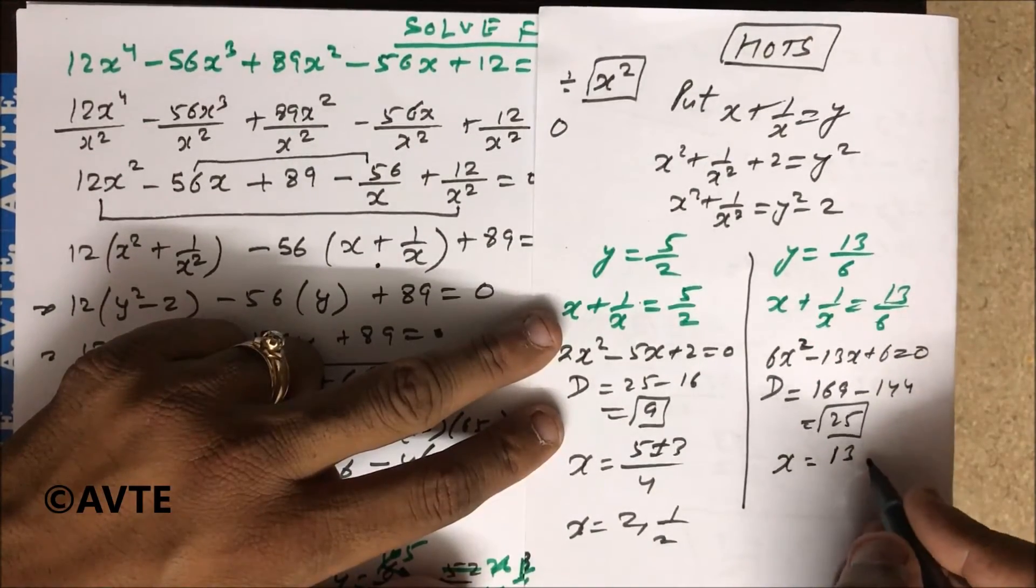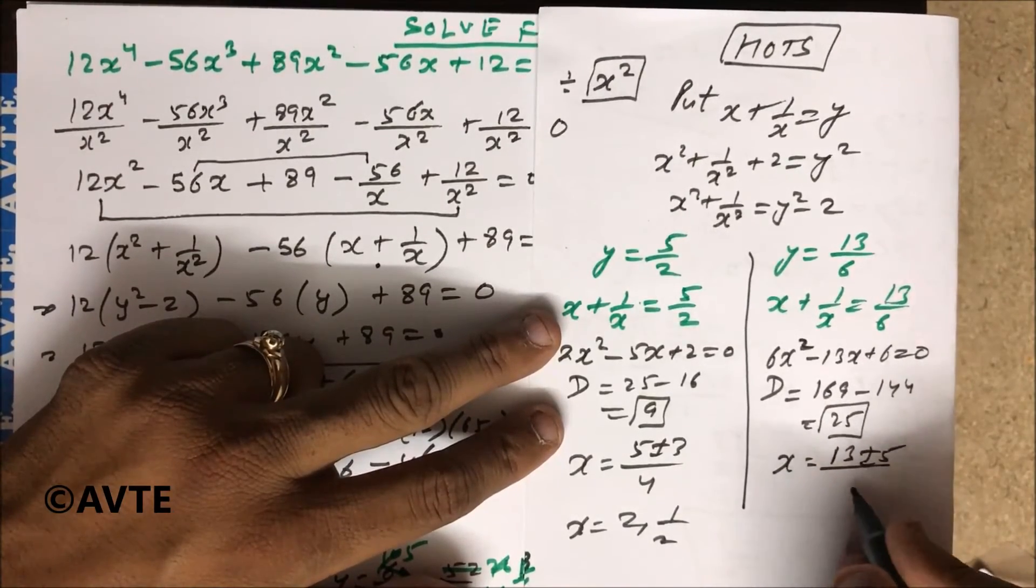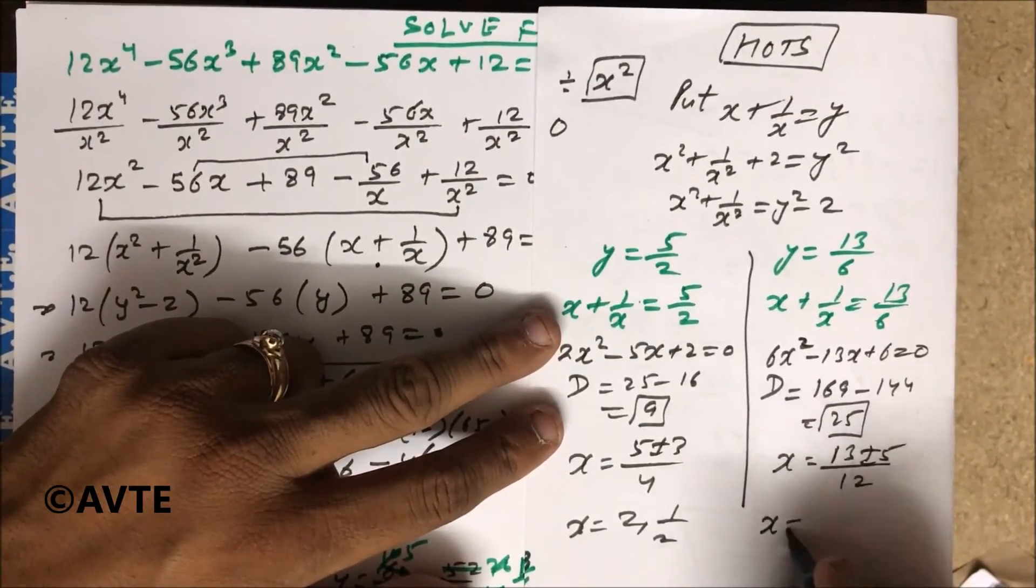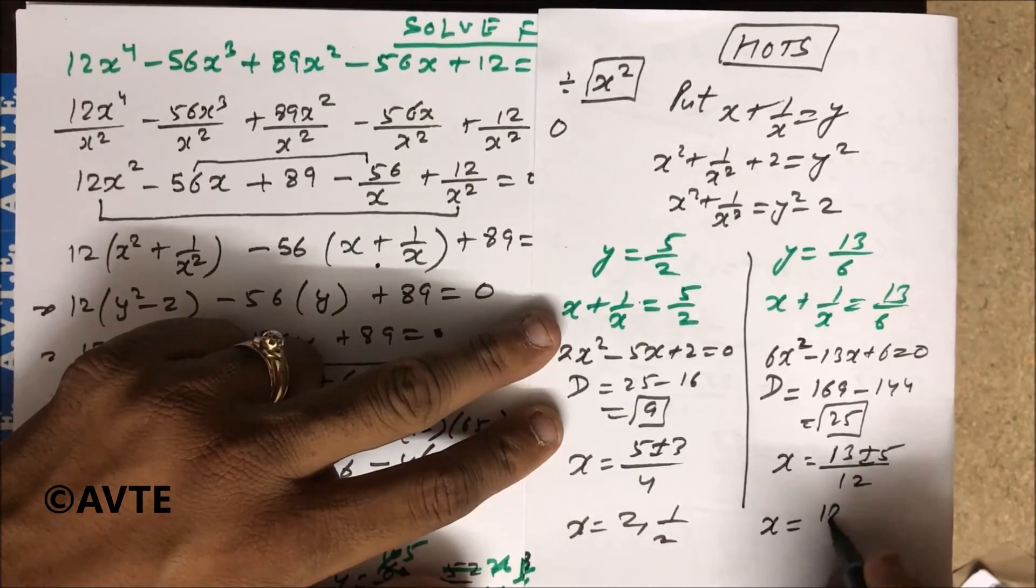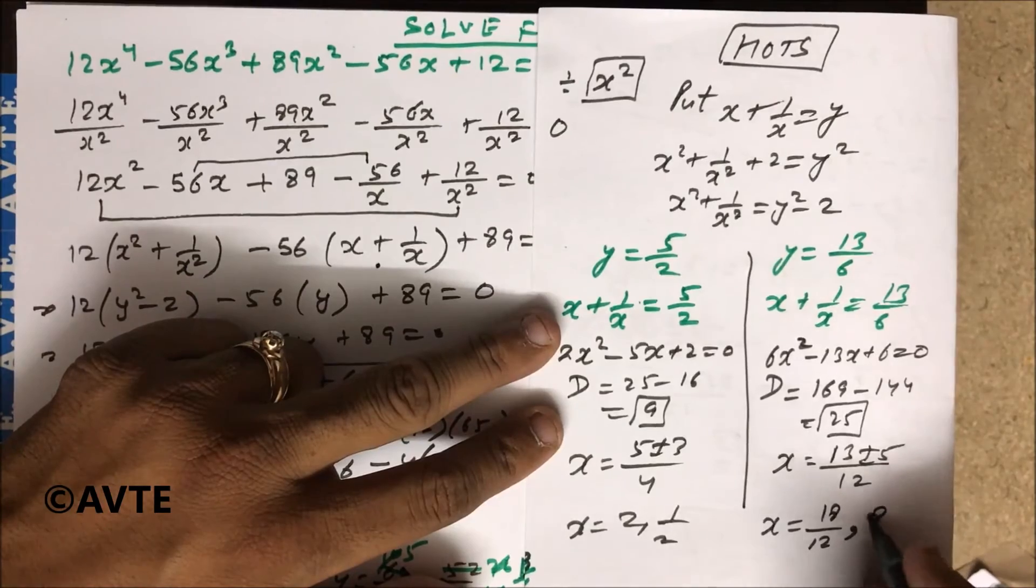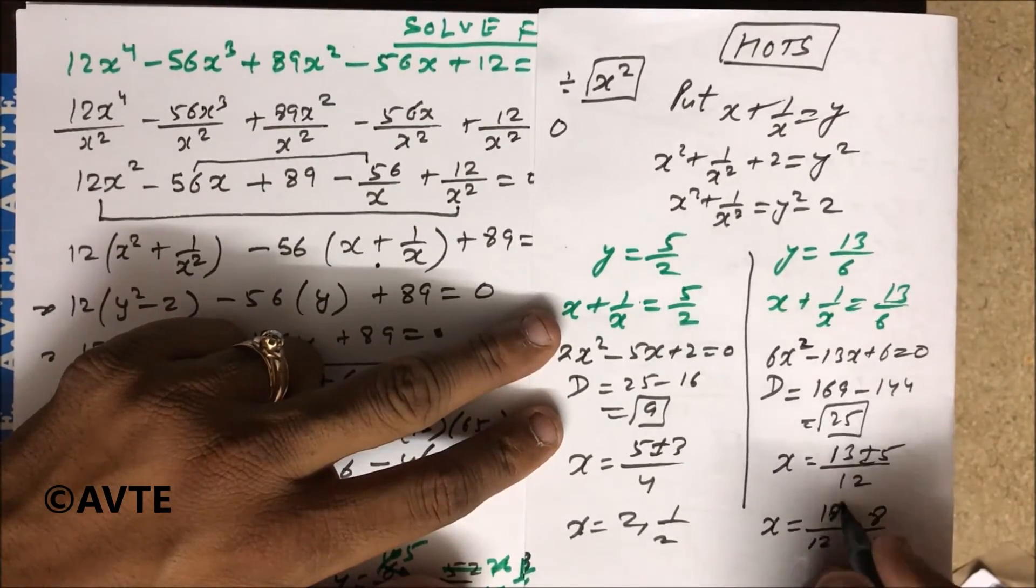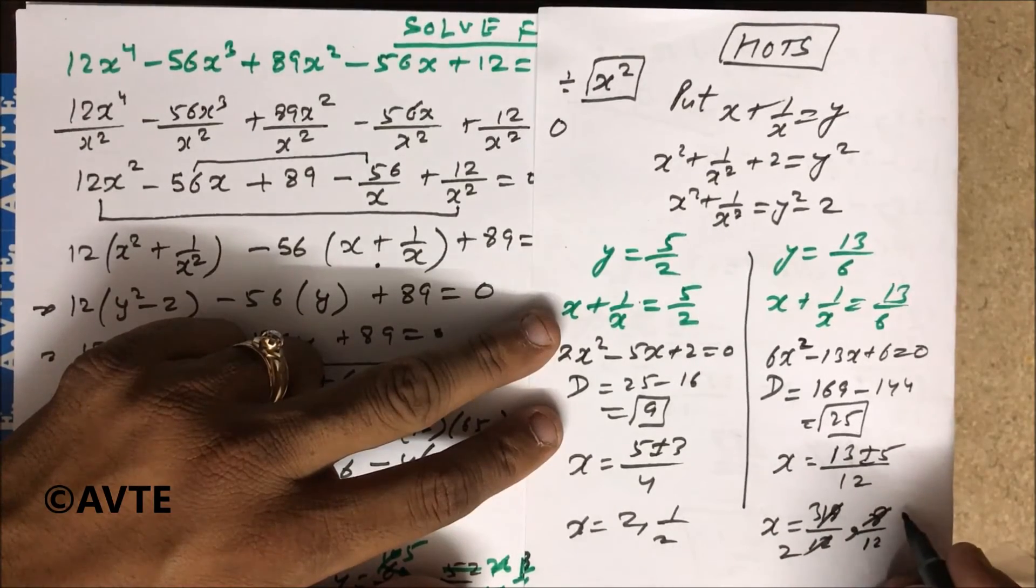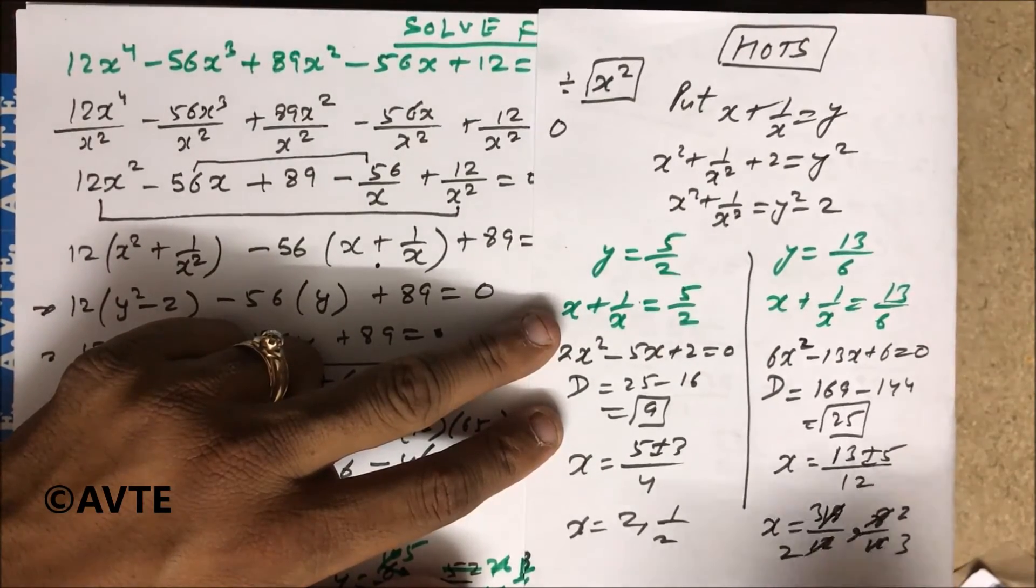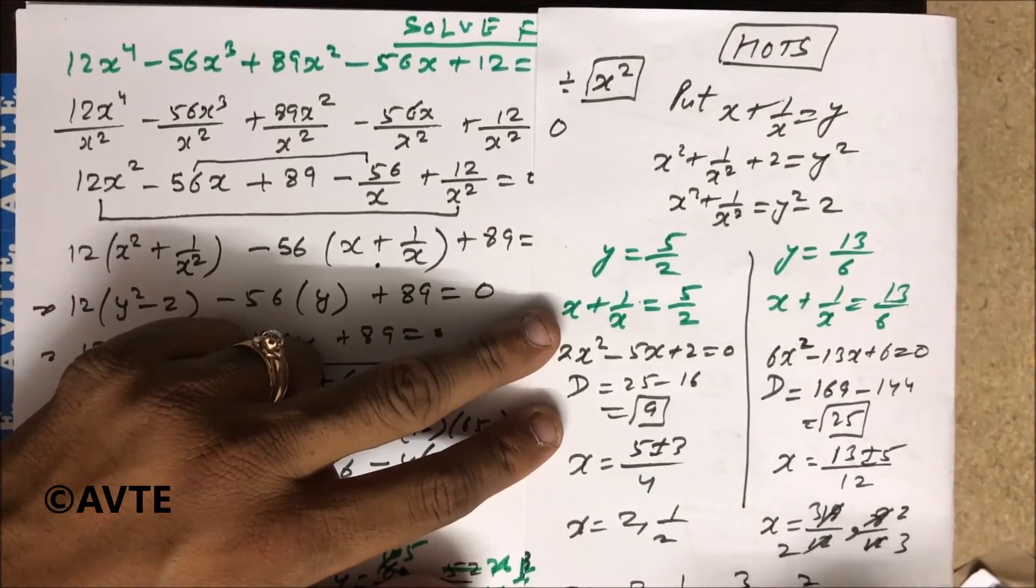Sorry my throat is bad today. So there is (13 ± 5)/12. So your answer of x is 18/12 and your answer of x is 8/12. So it is 3/2 and 2/3. So answer of x is 2, 1/2, 3/2, and 2/3.